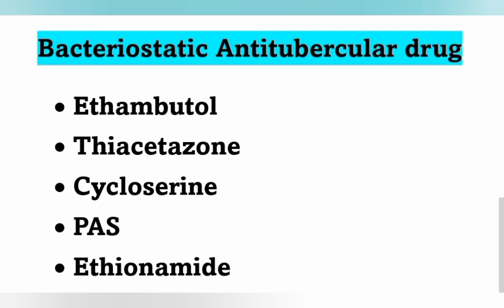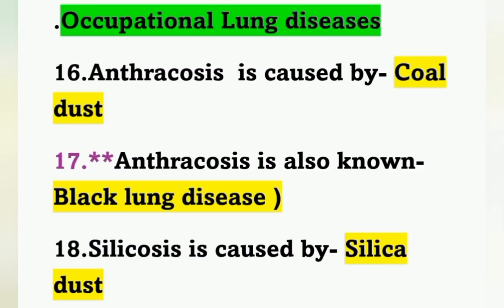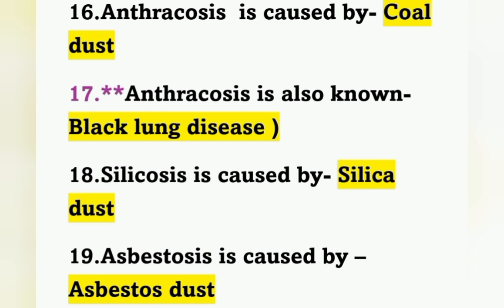Anthracosis is caused by coal dust and is also known as black lung disease. Silicosis is caused by silica dust, and Asbestosis is caused by asbestos dust.